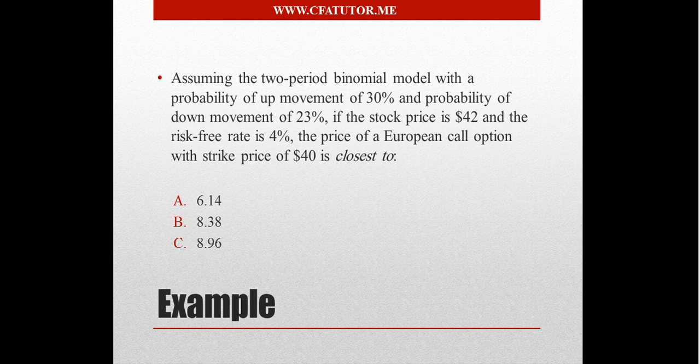Assuming the two-period binomial model with a probability of up movement of 30% and probability of down movement of 23%, if the stock price is $42 and the risk-free rate is 4%, the price of a European call option with a strike price of $40 is closest to what? And you have a couple of options here.